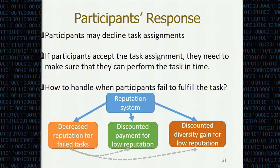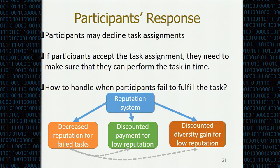Once assignment results are known to participants, they have the freedom to either reject or accept the sensing task. If they accept, they must ensure they can perform the task in time. We rely on a reputation system to ensure this works well. The reputation system works as follows: we decrease the reputation for users with failed tasks — for example, arriving late or not submitting sensing data at all. Correspondingly, we give discounted payment to users with low reputation. During the task assignment phase, we also consider discounted diversity gain for users with low reputation.